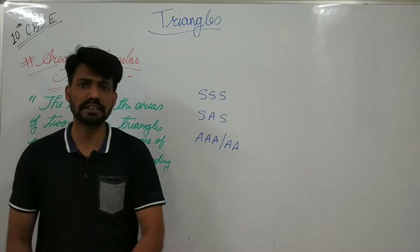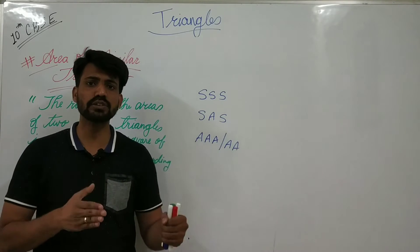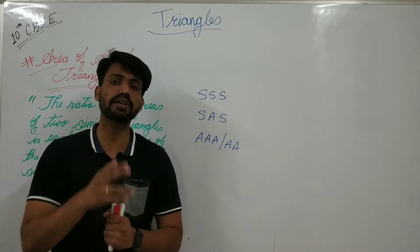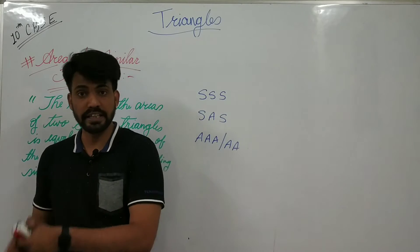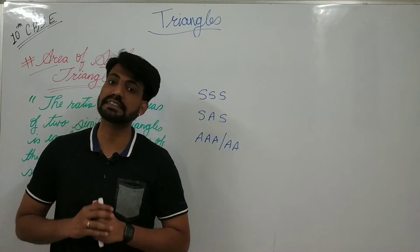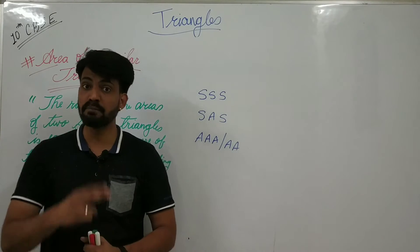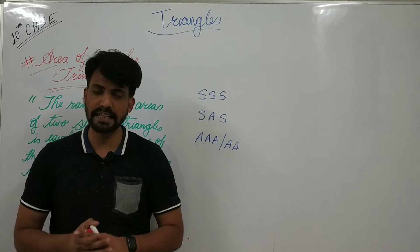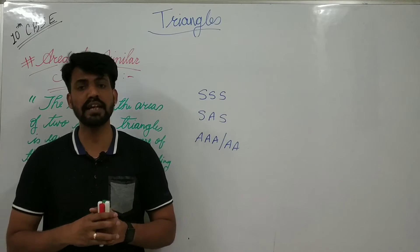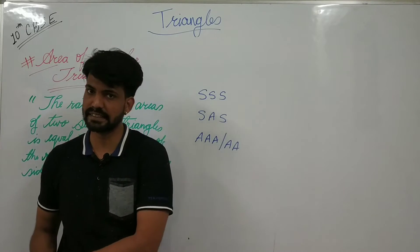SSS means Side-Side-Side: if any two triangles have all three sides in equal ratio, then those two triangles are similar. SAS means two sides and one included angle: if any two triangles have two sides in equal ratio and the included angle equal, then we can say those two triangles are similar by the SAS criteria.